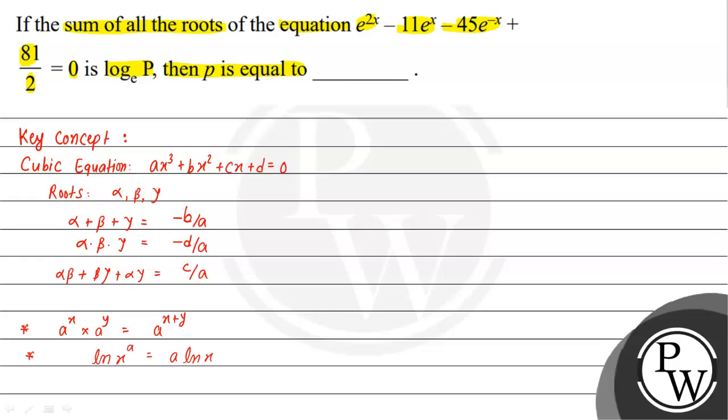The equation given is e^(2x) - 11e^x - 45e^(-x) + 81/2 = 0. Let me multiply both sides by 2 to get: 2e^(2x) - 22e^x - 90e^(-x) + 81 = 0.